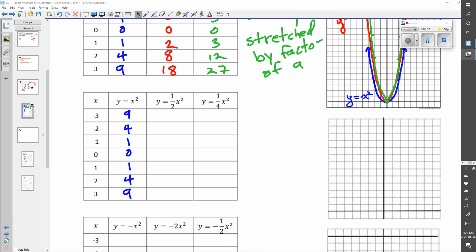For this problem, we're actually investigating what happens if we have an a value which is less than 1 but greater than 0. In this case, we're going to have 1 half x squared and 1 quarter x squared.